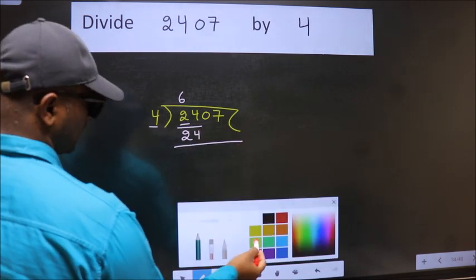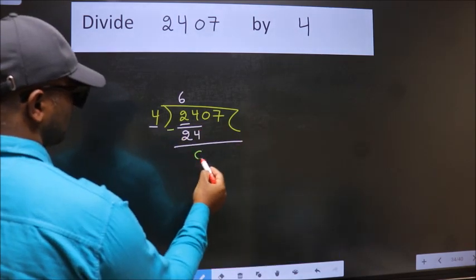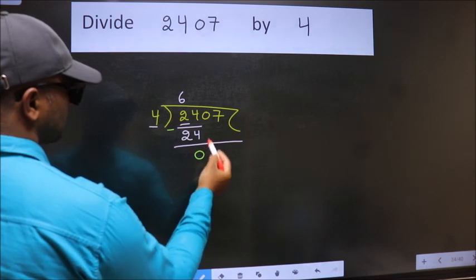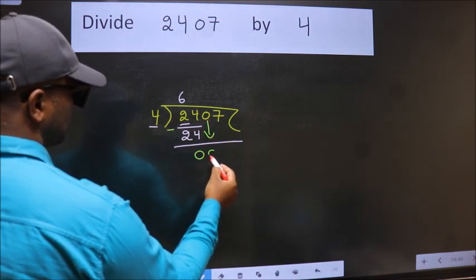Now we should subtract. We get 0. After this, bring down the beside number. So 0 down.